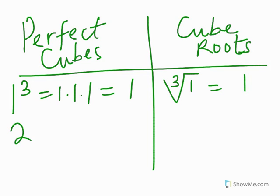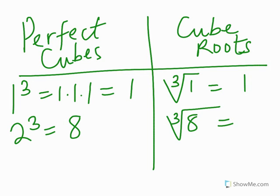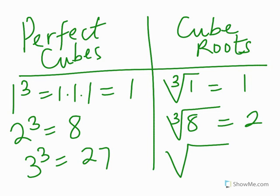Now, 2 cubed is 2 times 2 times 2, which is 8. This means that the cube root of 8 will give you 2, because when you multiply 2 three times, it gives you 8. 3 cubed is 3 times 3 times 3, which is 27. So the cube root of 27 is 3, because when you multiply 3 three times, it gives you 27.